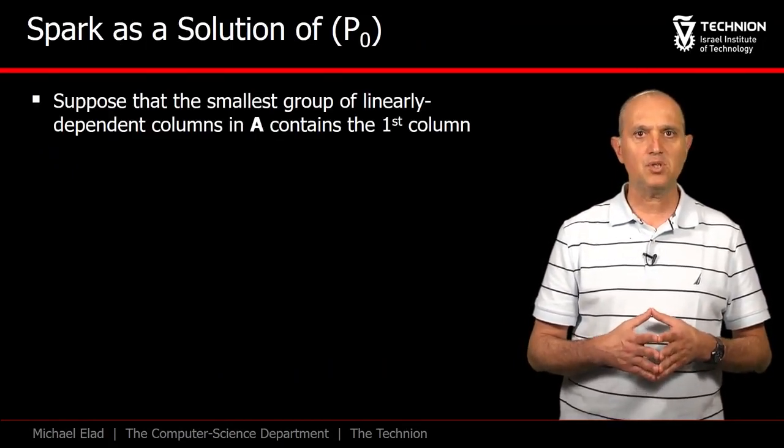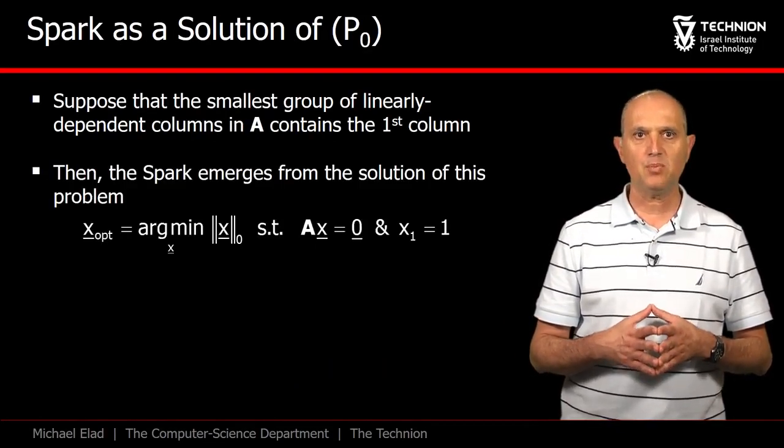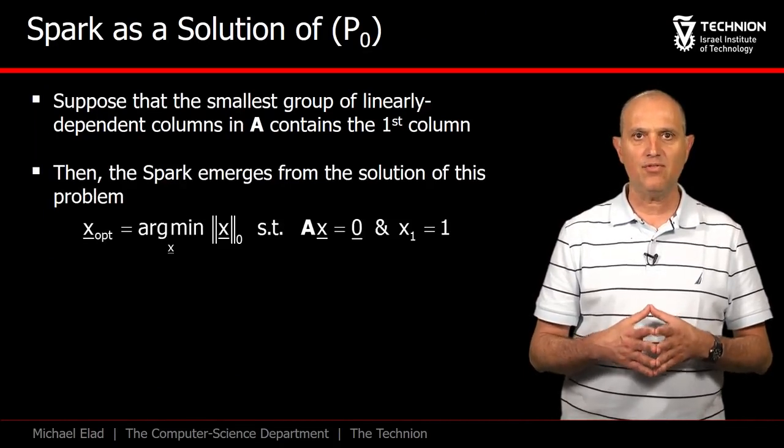First, assume that the smallest linearly dependent set includes the first column. Thus, we can get the spark exactly by solving the following problem.